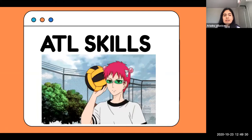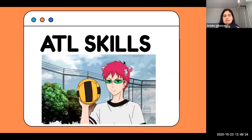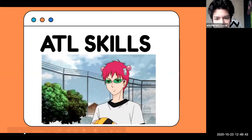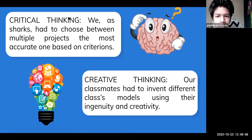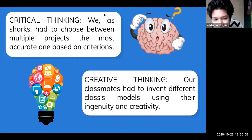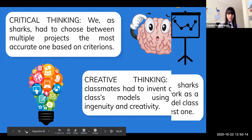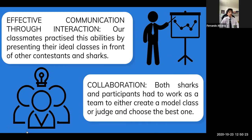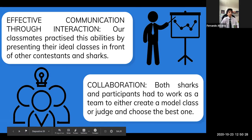This activity helped us develop ATL skills and IB skills. For ATL, we developed critical thinking, because as Sharks we had to choose the most accurate project based on different criteria. We also developed creative thinking, especially classmates who had to create a classroom using educational models and their own creativity. Additionally, we practiced effective communication through interaction, as classmates presented their ideal classes in front of contestants and Sharks. Finally, collaboration was key — both Sharks and participants had to work as a team to either create or judge an educational model.